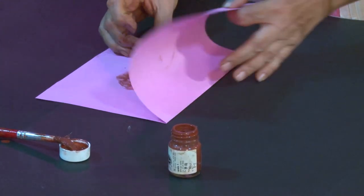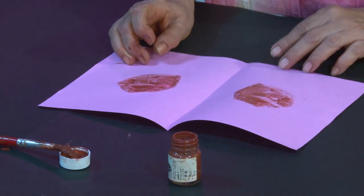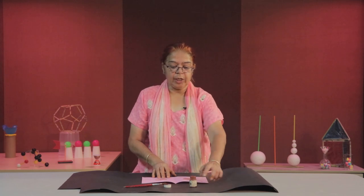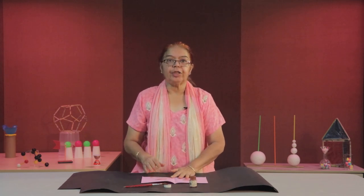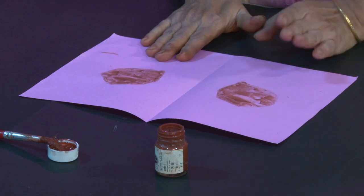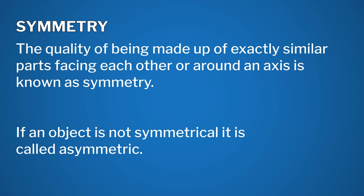Once again I will unfold the paper. What do you observe? The shape on the other side of the fold is the same as that on the first side. The picture that is formed is said to be symmetrical. The quality of being made up of exactly similar parts facing each other or around an axis is known as symmetry. Not all objects have symmetry — if an object is not symmetrical, it is called asymmetrical.